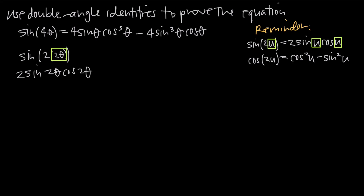Now we can simplify even further — both of our angles are in terms of 2 theta, and we want to get them down to theta. So this time we'll treat theta as u and plug it in. We're going to leave the 2 out in front. Sine of 2 theta, using this double angle identity, is going to become 2 sine of theta cosine theta, because we said u was equal to theta. Now we have to multiply that by cosine of 2 theta. We're going to say that we have cosine of 2 times theta, just like we have cosine of 2 times u, and we're going to replace u here and here with theta.